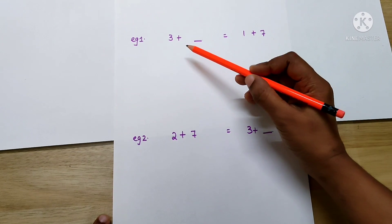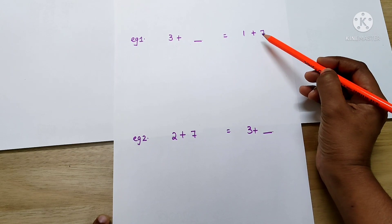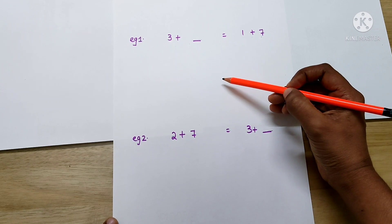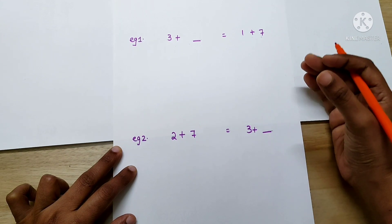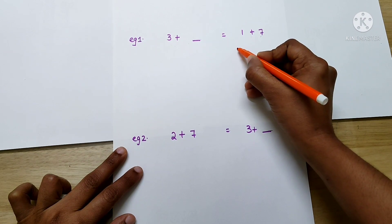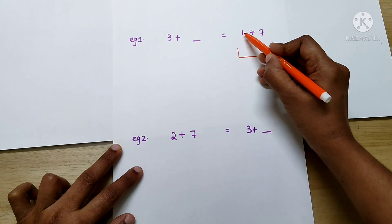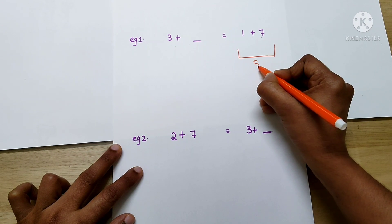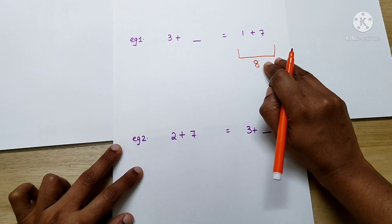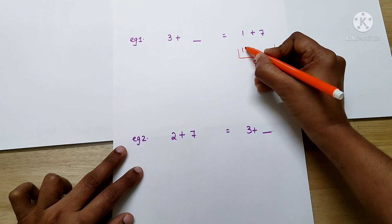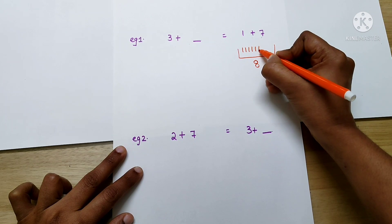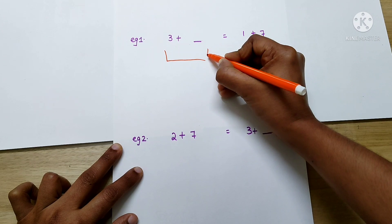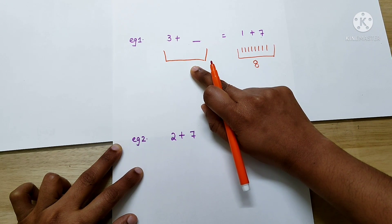Now let's consider this case: 3 plus dash equals 1 plus 7. If the equation is given like this, kids sometimes get confused. So we follow the same technique of drawing a basket. We draw baskets on the right side as well as the left side. Here we have drawn a basket for 1 plus 7. What is 1 plus 7? 8. So this basket contains 8 sticks. This basket should also contain 8 sticks, because there is an equal-to sign — these two baskets should contain the same number of things.